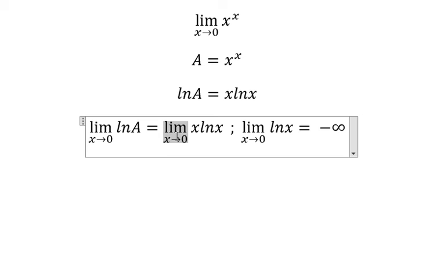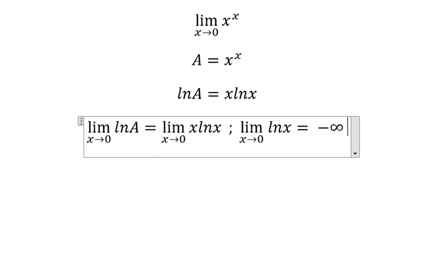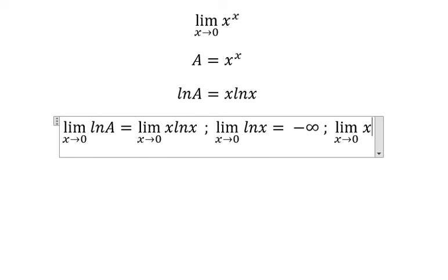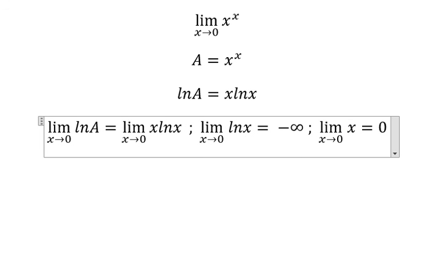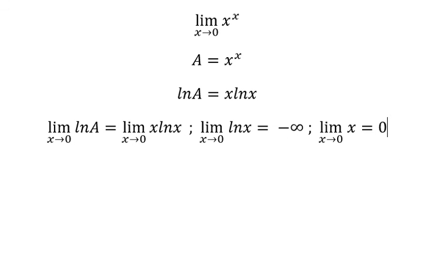And we know that x equals zero, so we have zero multiplied with negative infinity, so this one will equal number zero. That means this equals zero.